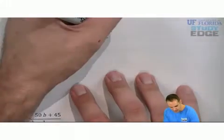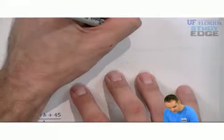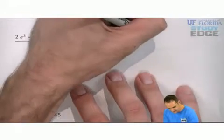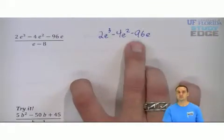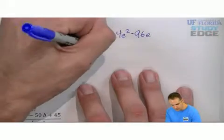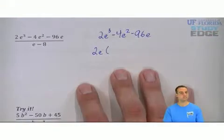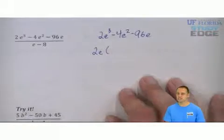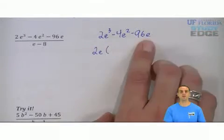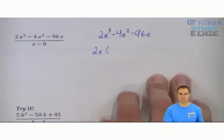I'm going to write out to the side 2e³ - 4e² - 96e. And I say I have a 2e in common, so I'm going to factor out a 2e GCF. 2, 4, 96 all divisible by 2. All these have the lowest power, e to the first.